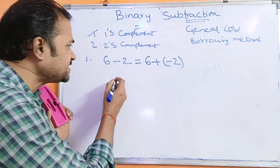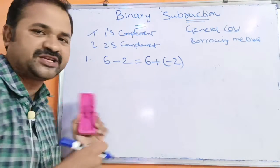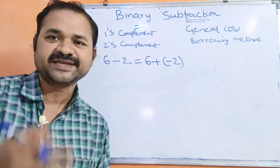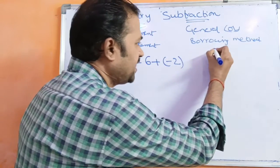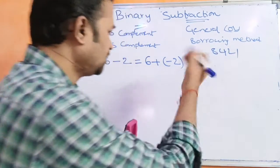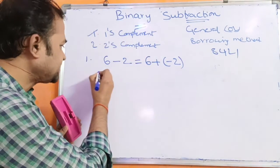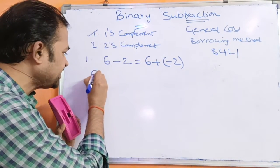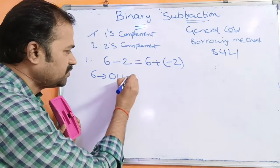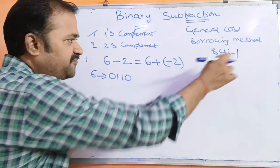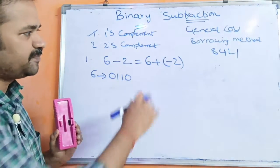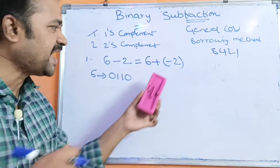How to represent 6 in binary notation? Let us use 4 bits in 8, 4, 2, 1 notation. So 6 in binary notation is 0, 1, 1, 0. We add 4 and 2 and the remaining positions are 0.